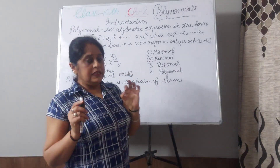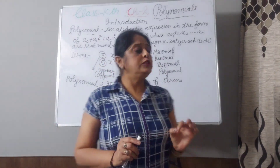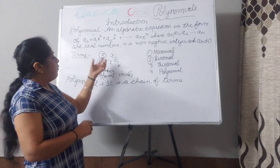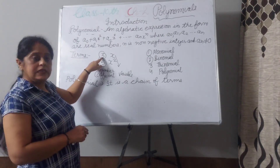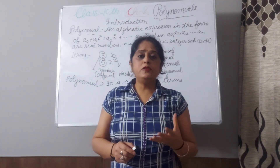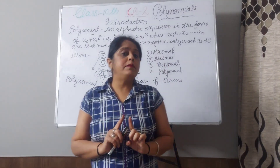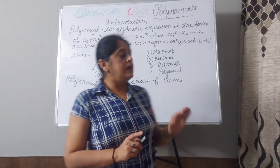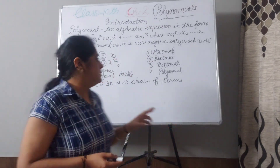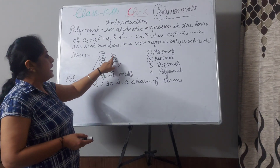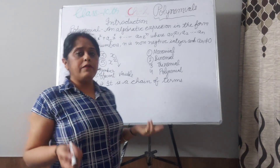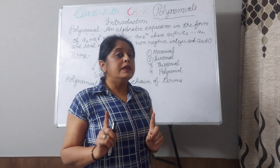First I want to tell you about terms in this algebraic expression. What are terms? Like 3x — here 3 is a number and x is a variable. A variable is a symbol represented by a letter from the alphabet. The number part is a constant, and in another language we also call it a coefficient. So 3 is the coefficient, x is the variable, and the power of x — whether x², x³, or xⁿ — should not be negative.